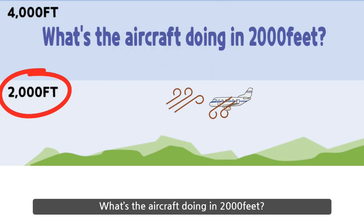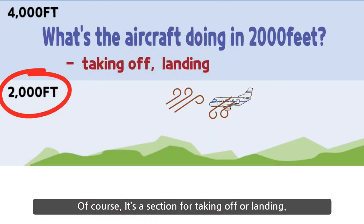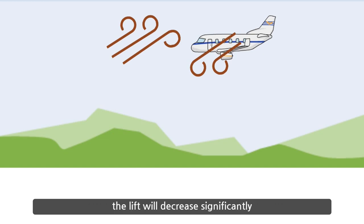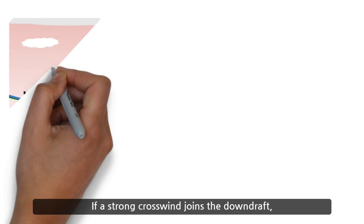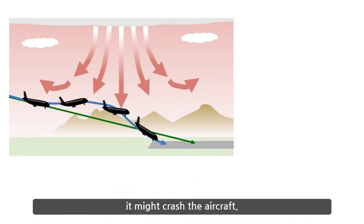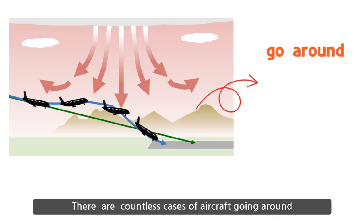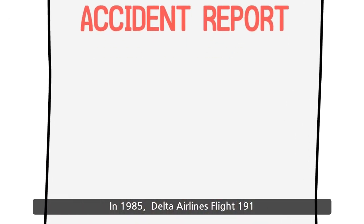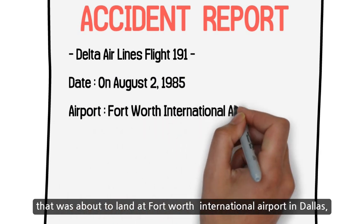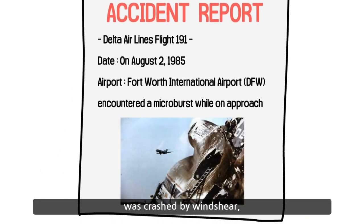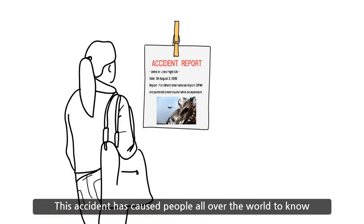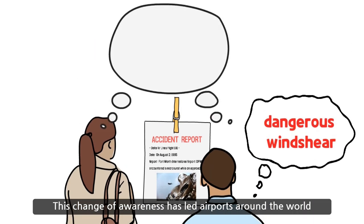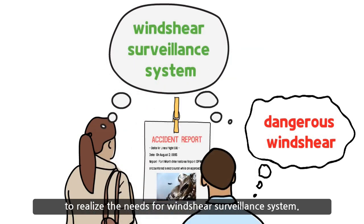What is the aircraft doing at 2,000 feet? Of course, it's in the takeoff or landing phase. To make matters worse, if strong crosswinds or tailwinds suddenly blow, lift will decrease significantly and altitude will fall quickly. If a strong crosswind joins a downdraft, it might crash the aircraft. There are countless cases of go-arounds, cancellations, and accidents related to wind shear. In 1985, Delta Airlines Flight 191, about to land at Fort Worth International Airport in Dallas, crashed due to wind shear. This accident made people around the world aware of how dangerous wind shear is.